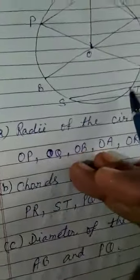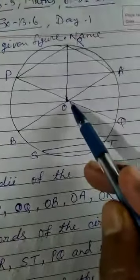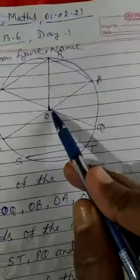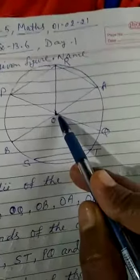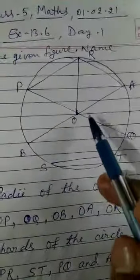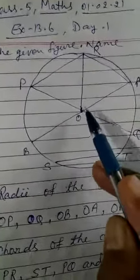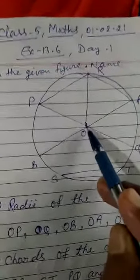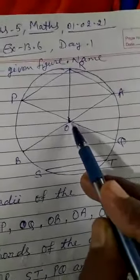So what is radius? Notice the line segment. The line segment joining the center of the circle to any point on the circle is called the radius of the circle. So you see there are 5 lines here which join the center of the circle to any point on the circle.